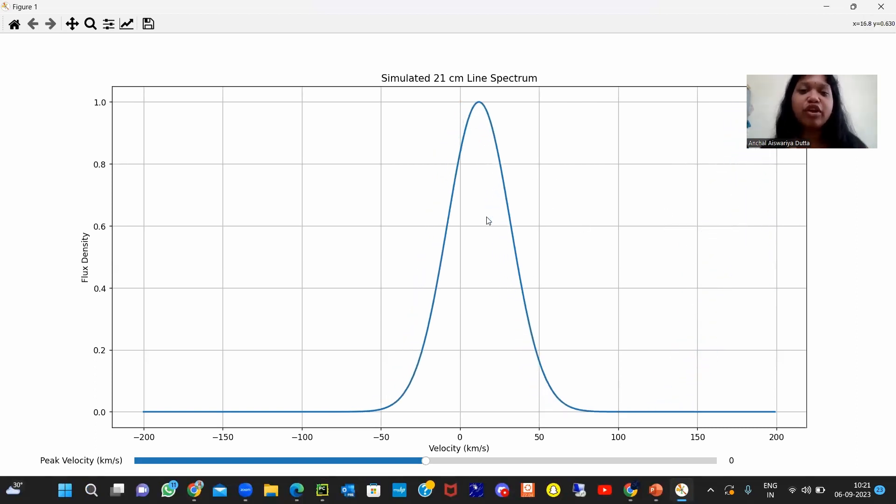Can you see it? Yeah, so this code actually creates a plot where the x-axis represents the velocity in kilometers per second and the y-axis represents the flux density or intensity.